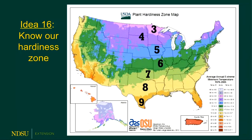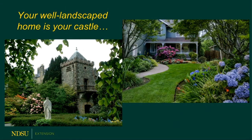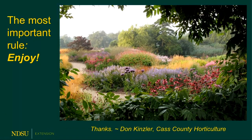Idea sixteen: know your hardiness zone. Plant material winter hardy in zone three is well adapted for our area. Zone four is a large zone, and some trees, shrubs, and perennials listed as zone four would be happier in the southern borders of zone four, so do a little investigating. Our home is definitely our castle — if we can take some of these ideas and improve our landscape just a little bit, we'll really enjoy it. The most important rule in landscaping above all else is to enjoy it. Thank you very much.